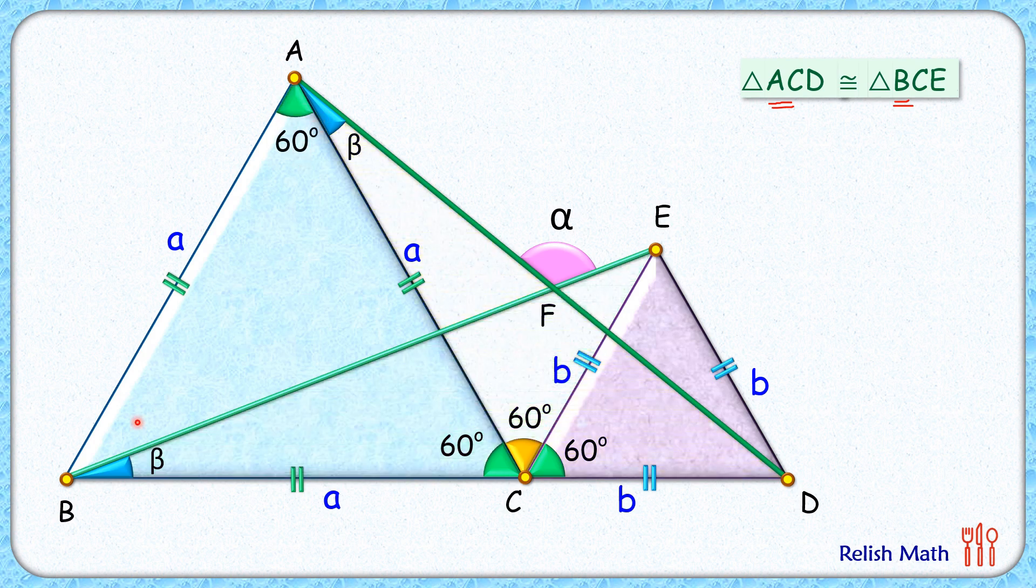So it's 60 degrees here and this angle. So the full angle is 60 degrees. So this remaining angle is 60 minus beta.